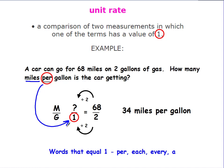The second ratio is from the problem and it says it gets 68 miles on two gallons. You still go from what you know to what you don't. I know this bottom number, this side here, and I'm going to go from two to one. The number is getting smaller, so I'm dividing by two. Whatever you do to the bottom, you do to the top.